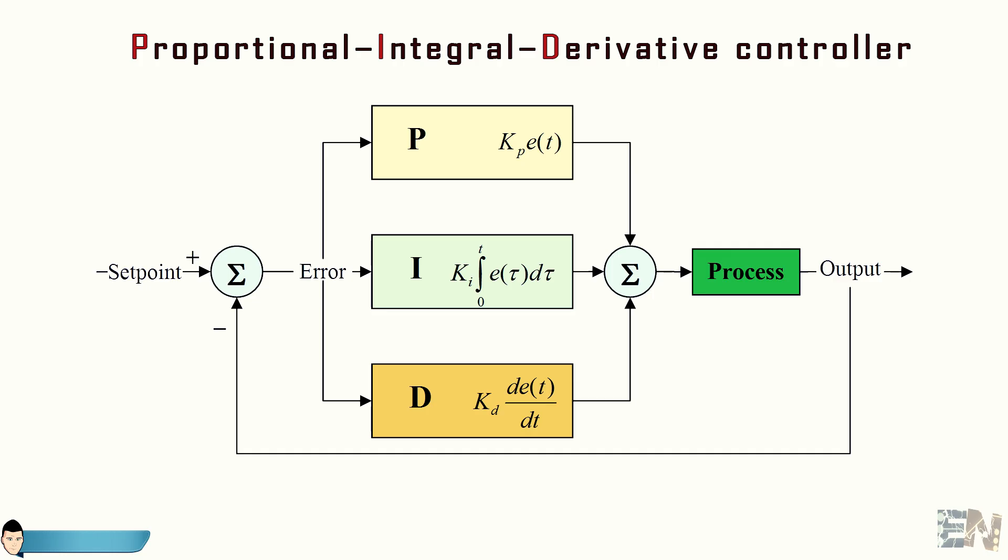As you can see we have our process that in this case will be the movement of the motors to keep the metal bar horizontal. After the process we have our feedback to the system that in this case is the real angle that the IMU unit will give us.